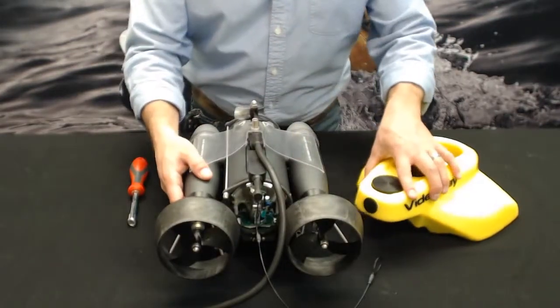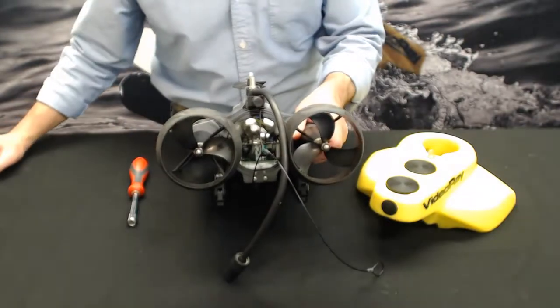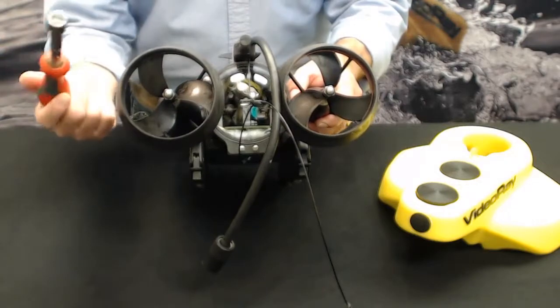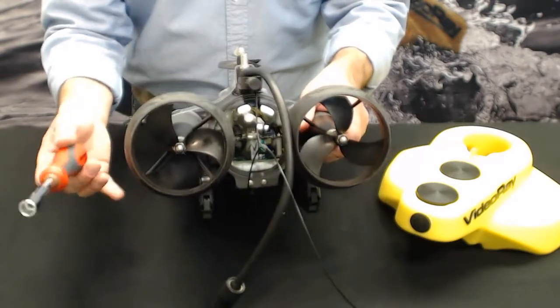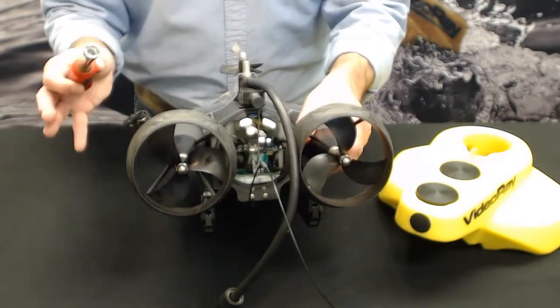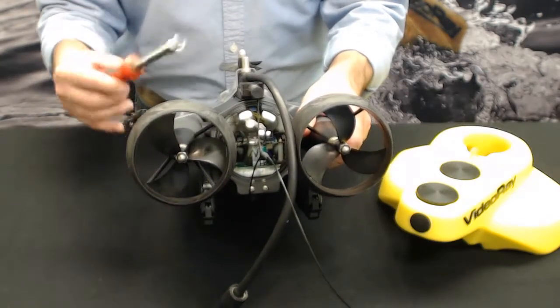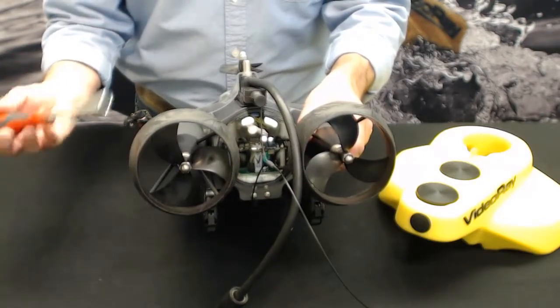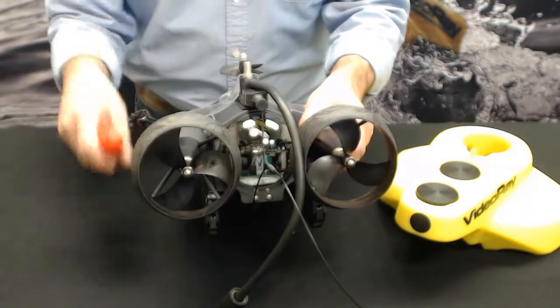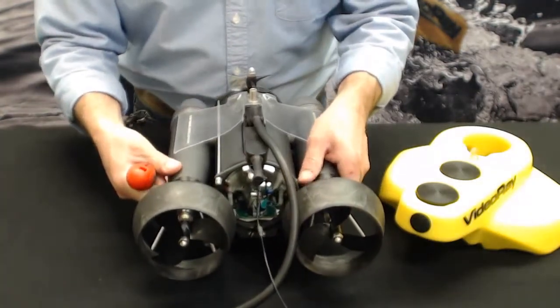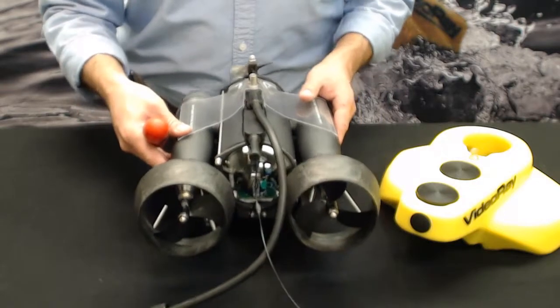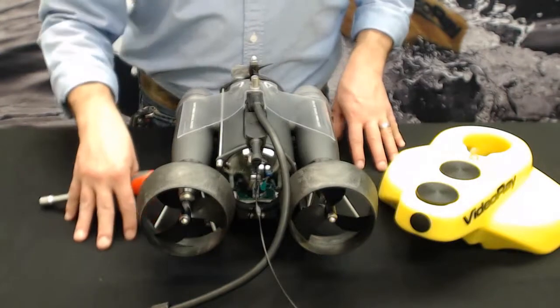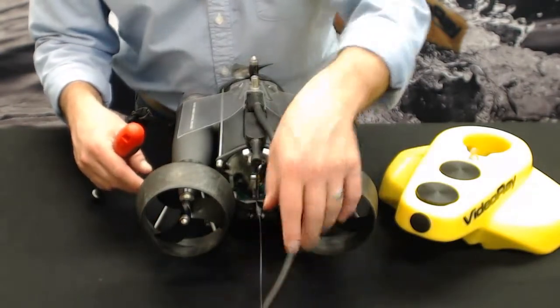We'll start with the horizontal props, the two big ones here. Let me zoom in for you. We're going to use our 7/16ths nut driver that comes in your basic toolkit. This is the same across the board for all the models, the old Pro 3 GTOs, the Scouts and Explorers all have the same size nut on them. This tool is universal throughout all the systems.